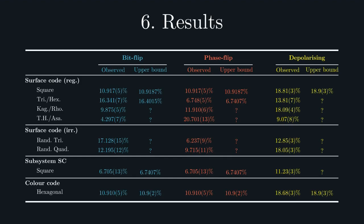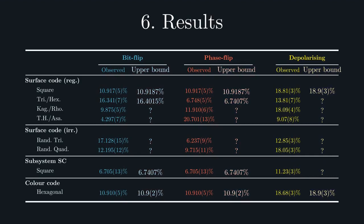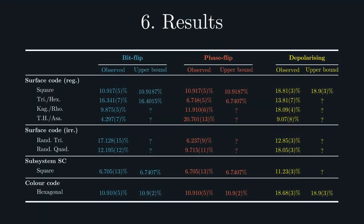For each of these, we have the numerically observed thresholds, alongside theoretical upper bounds, where known. In each of the cases where such upper bounds are known, the observed thresholds are within several error bars, suggesting we are well approximating optimal decoding.